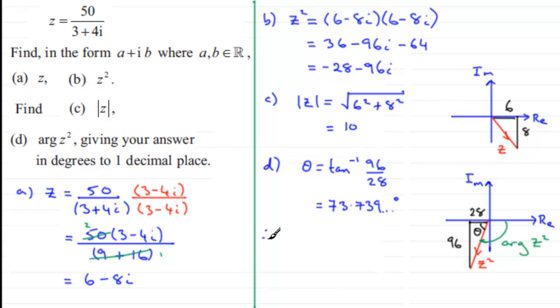So when it comes to the arg of z squared then it's going to be a negative turn and in size it's going to be 180 degrees minus the answer we've got here, 73.739 and so on. Working that out you should find you get minus 106.26 and so on. If we round this to the accuracy that's asked for, one decimal place, then it's going to be minus 106.3 degrees to one decimal place.